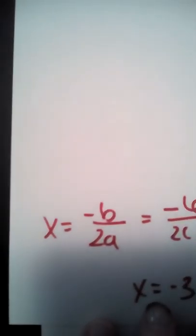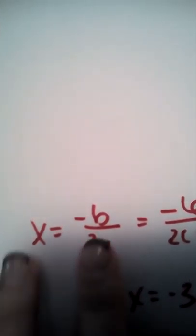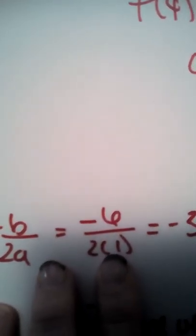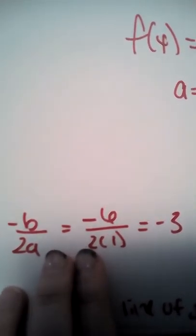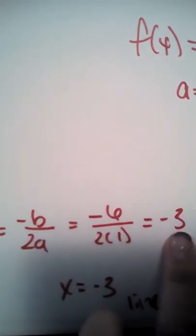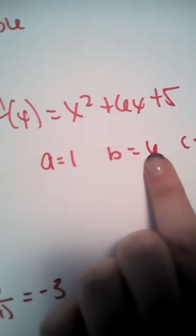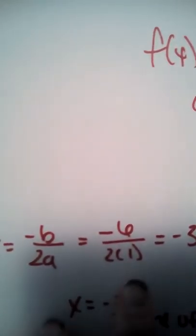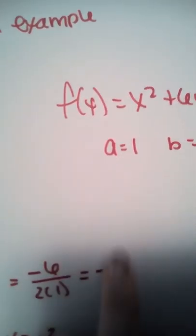Once we put those numbers into this equation, x equals negative B over 2A, which is also written like this with our values. x equals negative 6 divided by 2 times 1 equals negative 3. Our B is 6 and our A is 1. So we are correct.